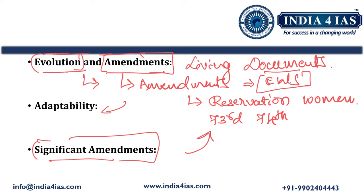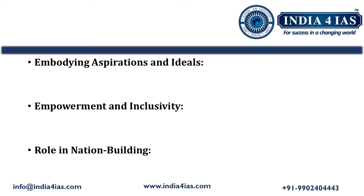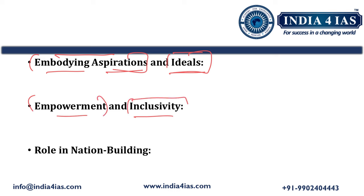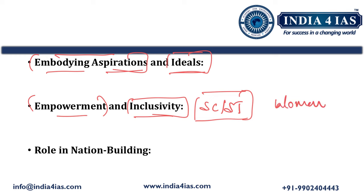This evolution through various amendments reflects the Indian constitution as a living document. After writing about the living document aspect, we should explain how the constitution embodies the aspirations of all sections of society and the ideals reflected in it. We should talk about how the constitution addresses issues of empowerment and inclusivity — provisions for scheduled castes and scheduled tribes, provisions for women's empowerment, and provisions for weaker sections via DPSP — and how these ensure social justice.